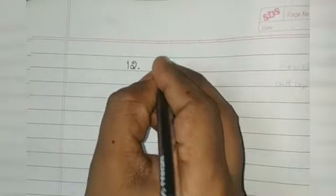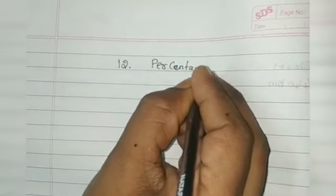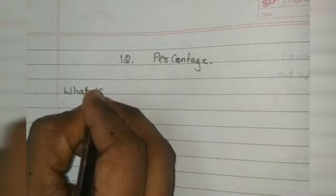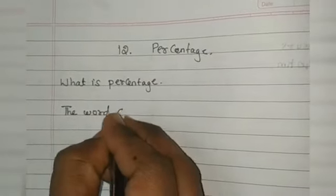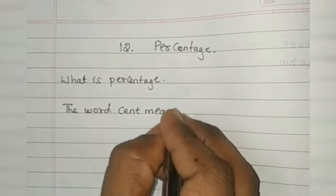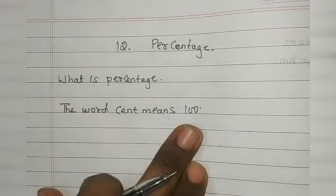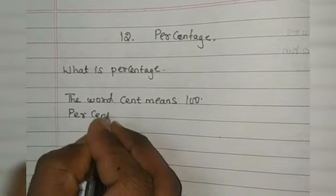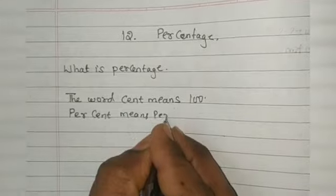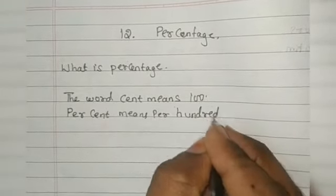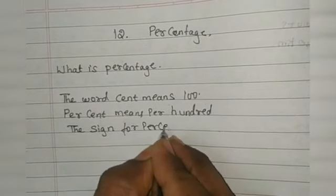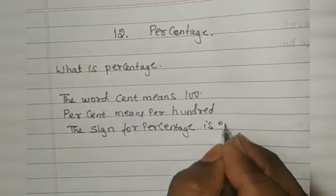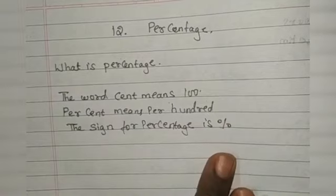Chapter 12: Percentage. First we will learn the definition of percentage. What is the percentage? The word 'cent' means hundred. Percent means per hundred. The sign for percentage is written as '%'.